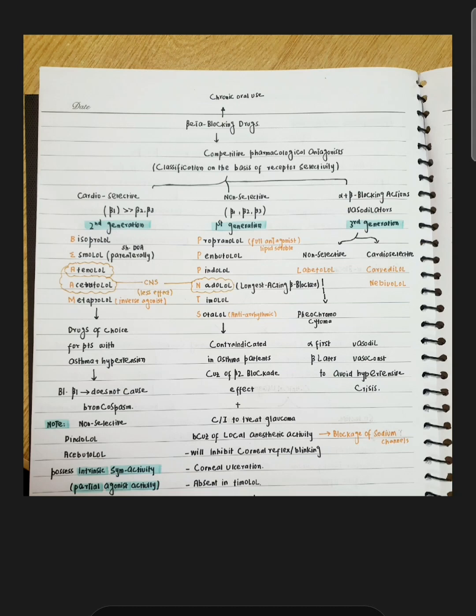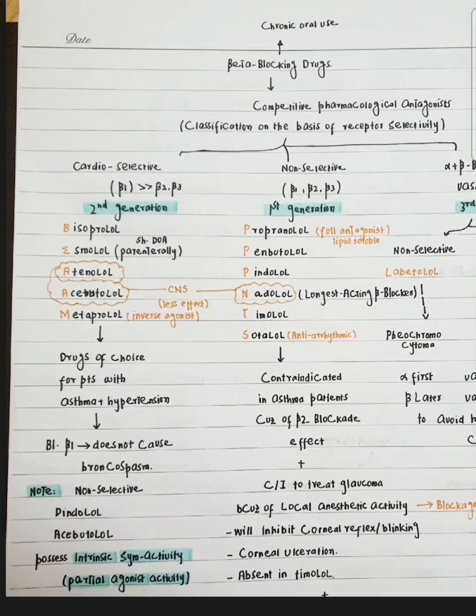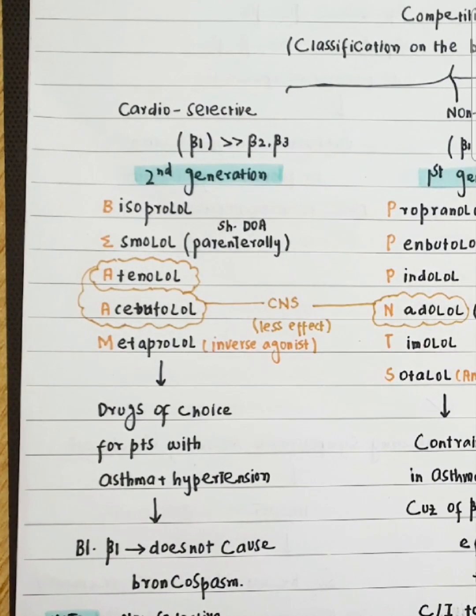Back to our discussion on cardioselective, non-selective, and third generation drugs. Let's talk about cardioselective drugs because in the book the first discussion on cardioselective started. It's very important for you to memorize the names of all these cardioselective drugs. We will use the mnemonic BEAM.